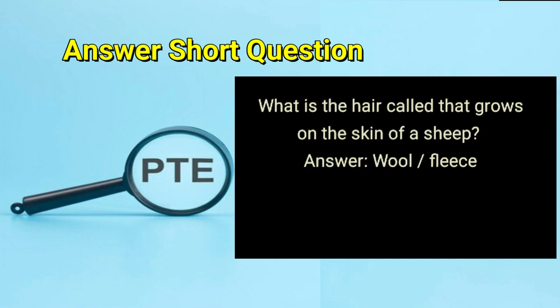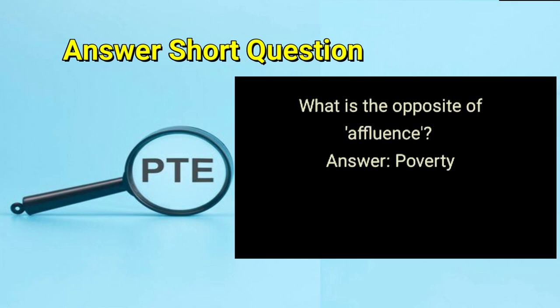What is the hair called that grows on the skin of a sheep? Answer: wool or fleece. What is the opposite of affluence? Answer: poverty.